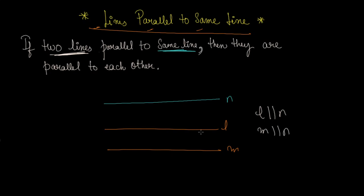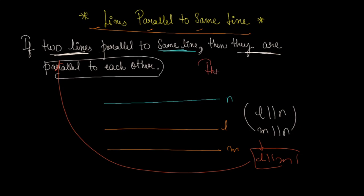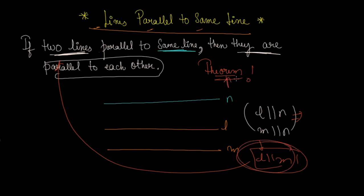If two lines are parallel to the same line, then when two lines are parallel to one line, they are parallel to each other. In easy language: L is parallel and M is parallel to the same line N. If there are such conditions, these two lines are parallel to each other according to this theorem.